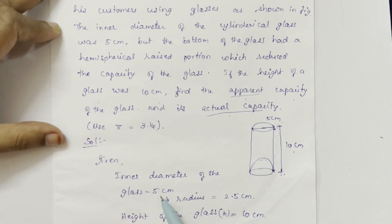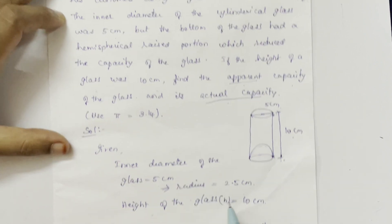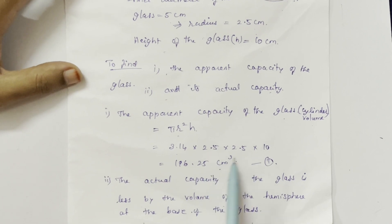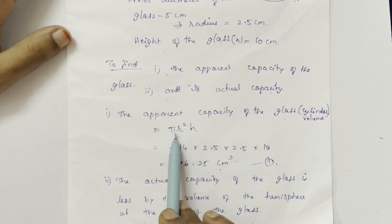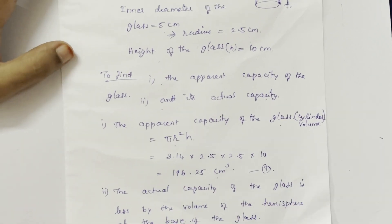The diameter is 5 cm, so the radius is 2.5 cm. The height is 10 cm. We substitute these values into the volume formula. This gives us the apparent capacity of the glass.